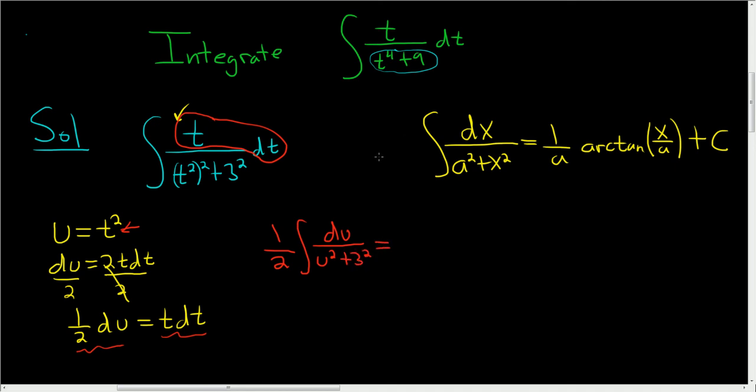And now we can apply our formula. So it's 1 over a, so a is 3, so we have the 1 half hanging out and then 1 over 3 arc tan of u over 3 plus our constant c.